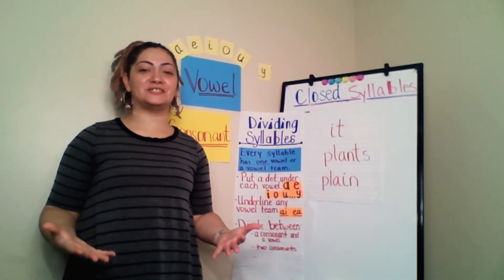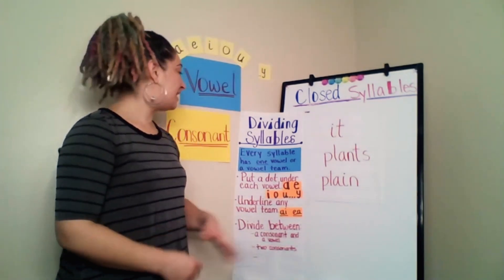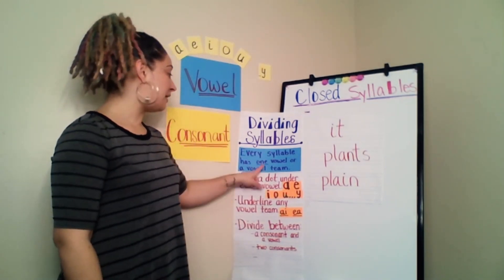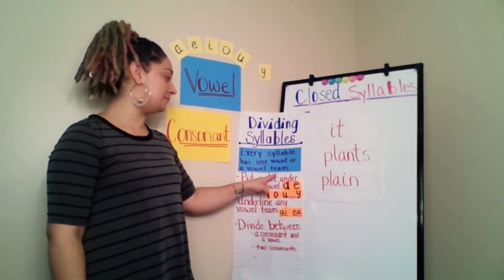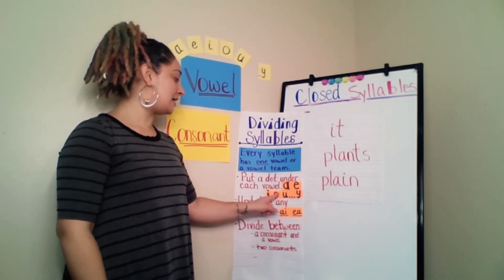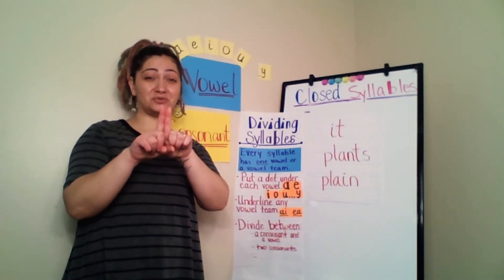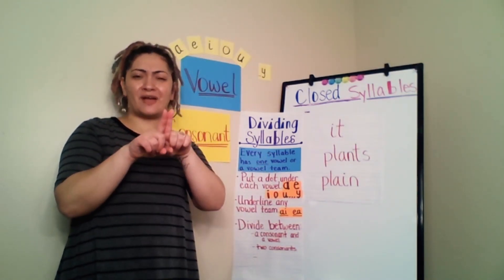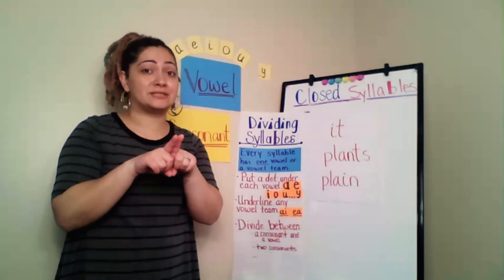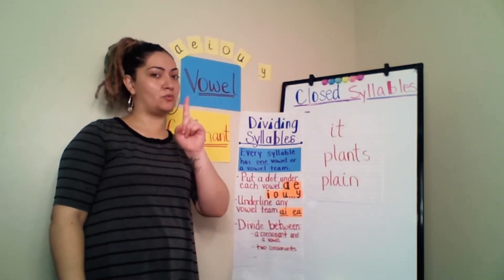Let's take a look at a strategy we can use to break up a word into syllables or parts. It's really important to remember that every syllable is only going to have one vowel sound. That vowel sound can be made by one vowel or a vowel team. When we see vowels, we're going to put a dot under every vowel — A, E, I, O, U, or Y. If we notice that there are two vowels right next to each other, we have to decide if those two vowels are working together as a team making only one sound. If they are a team, we're going to underline them to show it's still only one vowel sound.